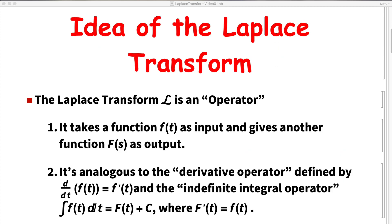Before looking at the formula for the Laplace transform, let's start by talking about the big idea of what it is. The Laplace transform, labeled cursive L, is an operator — a special kind of function. It takes a function f(t) as input and gives another function F(s) as output. Its inputs and outputs are functions, not numbers.